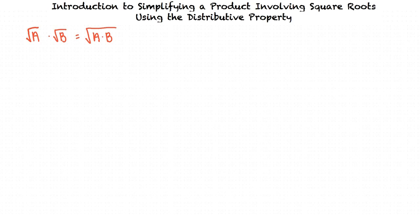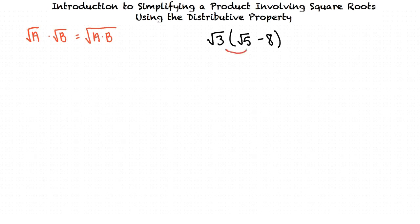So what kind of problems will we see in this topic? Let's look at an example problem: the square root of 3 times the quantity square root of 5 minus 8. Our first step is to distribute the square root of 3 to each term in the parentheses. So we multiply the square root of 5 times the square root of 3, and we multiply negative 8 times the square root of 3. This leaves us with the square root of 3 times the square root of 5, minus the square root of 3 times 8.